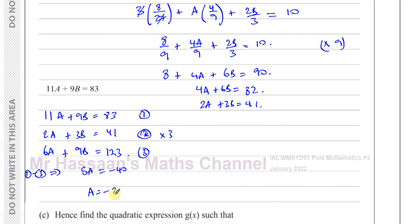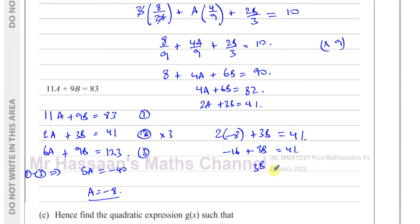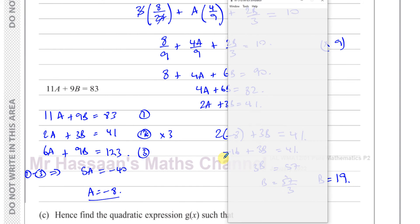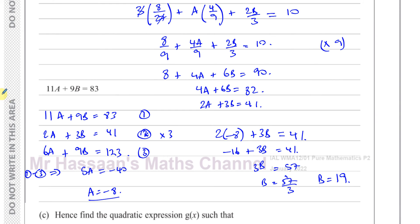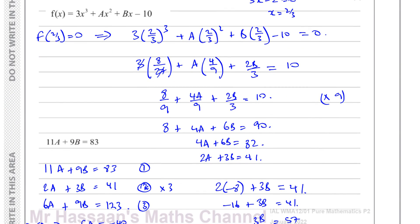Therefore a equals negative 8. To find b, substitute a equals negative 8 into 2a plus 3b equals 41: 2 times negative 8 plus 3b equals 41, so negative 16 plus 3b equals 41, giving 3b equals 57, and therefore b equals 19. So a equals negative 8 and b equals 19.